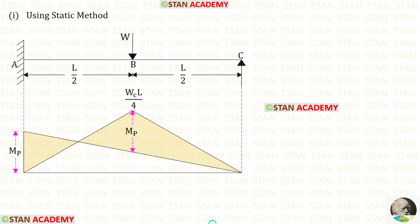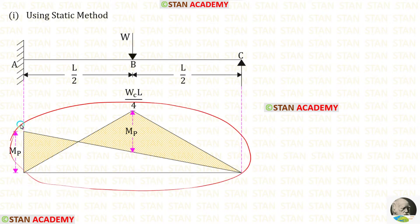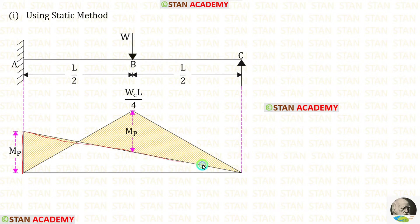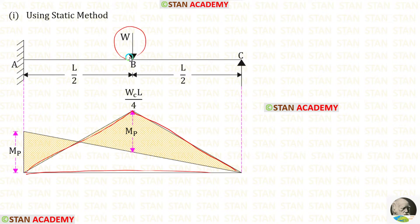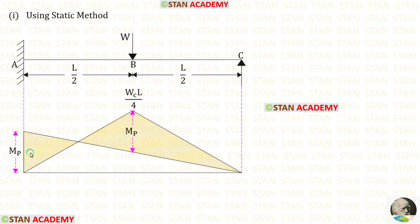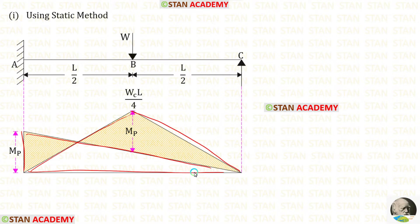This is the bending moment diagram for a propped cantilever beam subjected to a central point load. In this bending moment diagram there are two parts: the end moment diagram, which we construct using the moment at point A, and the free moment diagram, which we construct using the load — assuming the beam is simply supported. In a simply supported beam with a central point load, the bending moment formula is WL upon 4. Combining the end moment and free moment diagrams gives us the full bending moment diagram.